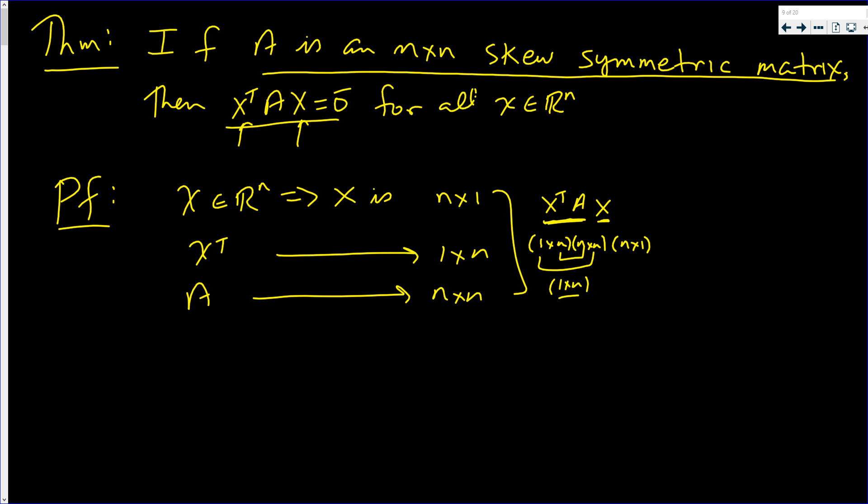Now I multiply it by x. Oh look at this, n by one. Those are the same, so my answer is going to be a real number. It's going to be a one by one matrix which is a real number.